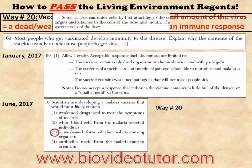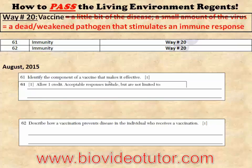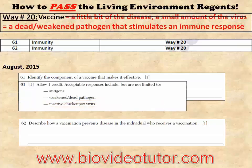They also had a reading passage — a small one — but you did not even need to read that to get the one point for the short answer. Now, a little throwback to August 2015: two short answer questions dealing with way number 20. 'Identify the component of a vaccine that makes it effective.' Again, just write that it has a weakened or dead pathogen in it, and you get that one point credit. Do not write those other things — you will lose the point.